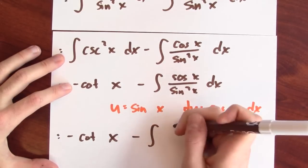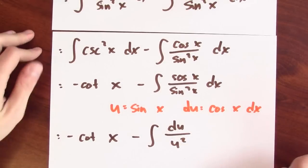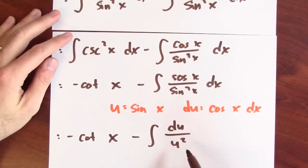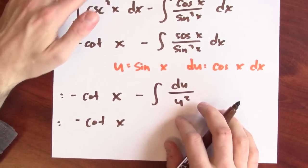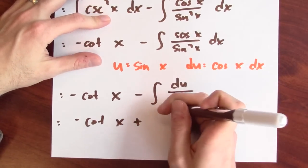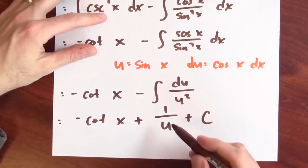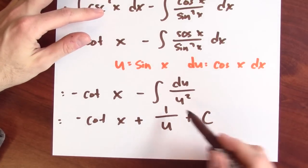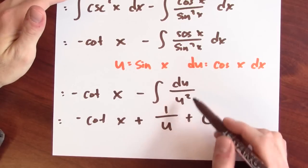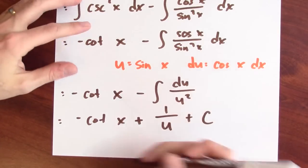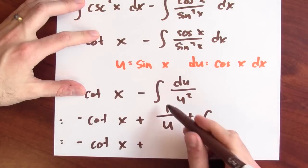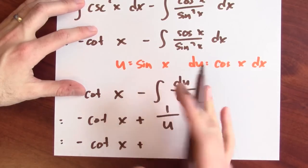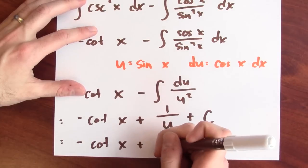This anti-differentiation problem becomes the anti-derivative of du over u squared. I need to anti-differentiate u to the negative second power, which by the power rule gives negative 1 over u plus c — since differentiating 1 over u gives negative 1 over u squared. Substituting back, this is negative cotangent x plus 1 over sine x, which I can write as cosecant x plus c.